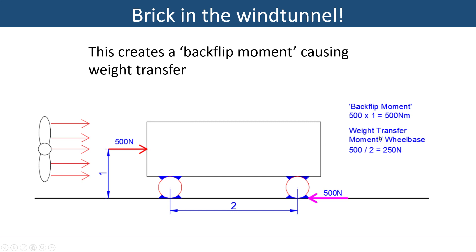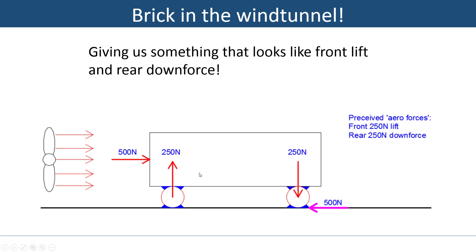Now if you do the math, it's not that complicated. You can get weight transfer from this, because this moment here has to be reacted somewhere, and it can only happen from weight transfer, which comes down to 250 newtons. You basically divide the moment by the wheelbase and you get a weight transfer. If you do the math and we add the numbers, this is what we get. That brick that we just dropped straight down, and we are sure has no downforce or lift, now seems to produce front lift and rear downforce.